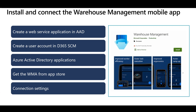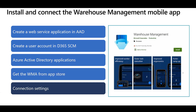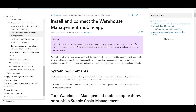Now let's review how to install and connect the Warehouse Management mobile application. From a high-level overview, you should create a web service application in Azure Active Directory to manage communication between the Supply Chain Management environment and the mobile application. Then create an active user and define the Azure Active Directory applications in the Supply Chain Management environment. Then get the Warehouse Management application from either the Google Play store or the Microsoft store, define the connection settings on each mobile device, and after that you should be able to log into the application. You can follow the step-by-step article on Docs.Microsoft for how to install and connect.